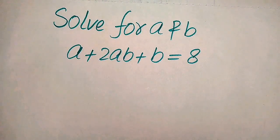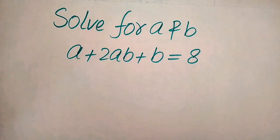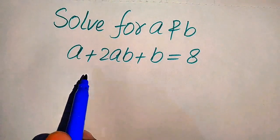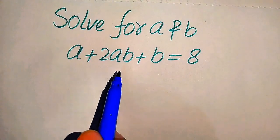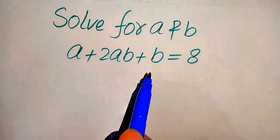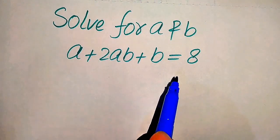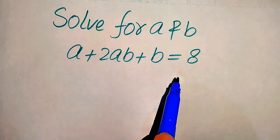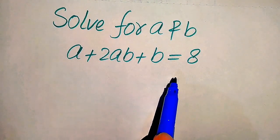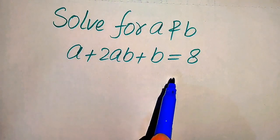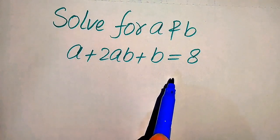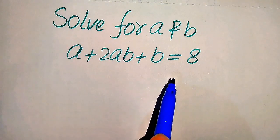Hello everyone. How to solve this problem for the values of a and b: if we have a plus 2ab plus b is equals to 8, we solve this problem for the values of a and b.